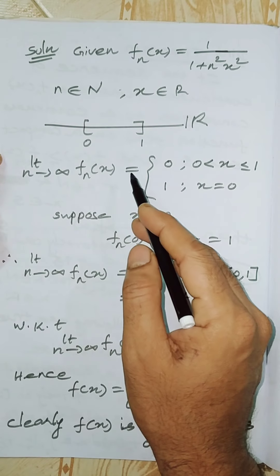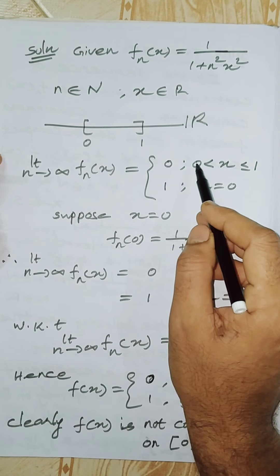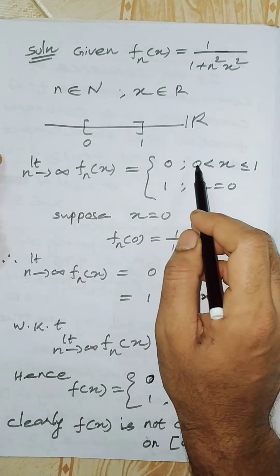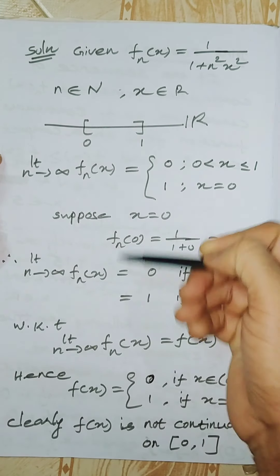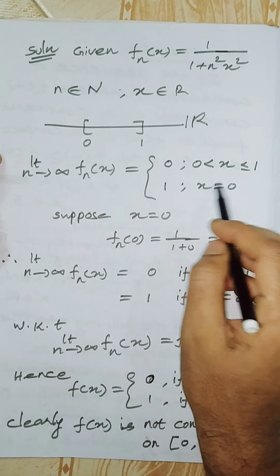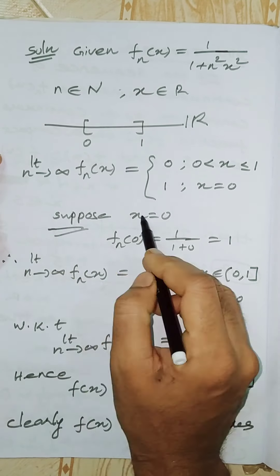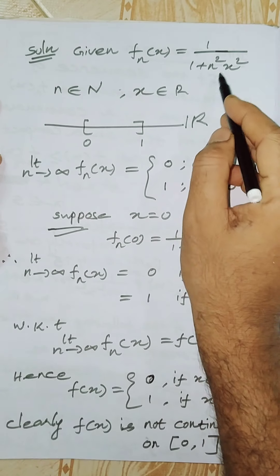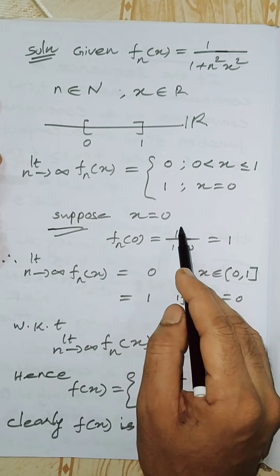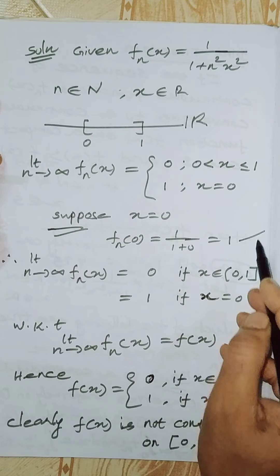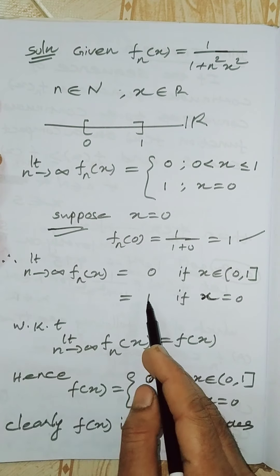The limit as n tends to infinity of fn(x) equals 0 for 0 less than x less than or equal to 1. Now suppose x equals 0: substituting x equals 0, fn(0) equals 1 divided by (1 plus 0) equals 1. Whatever the value of n, as n tends to infinity we are still getting 1.